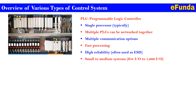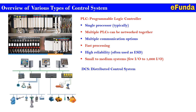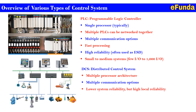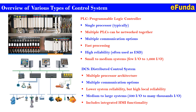The second type is the Distributed Control System, DCS. One can refer to the picture showing the architecture, which includes mainly multiple processor architecture, multiple communication options, and lower overall system reliability but high local reliability. It is a medium to large system — from 500 IOs to many thousands of IOs — and includes integrated HMI functionality.